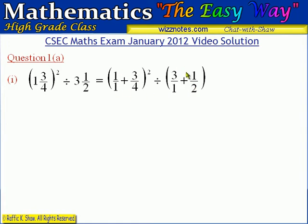Then what we want to do is add these two fractions. To add the fractions we are going to make the denominators the same. Because the denominator of 3 quarters is 4, we want this denominator also to be 4, so we multiply this 1 by 4 and multiply the numerator by 4. This will become 4 over 4. Similarly, we want this denominator to be 2, so we multiply that 1 by 2 and the numerator by 2, giving us 6 divided by 2.